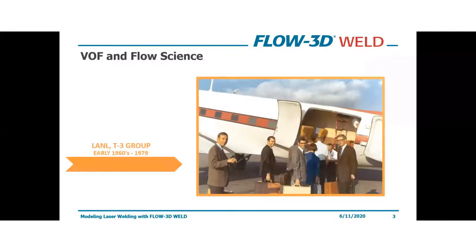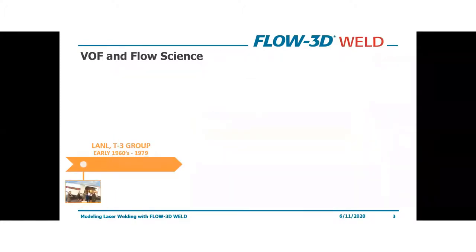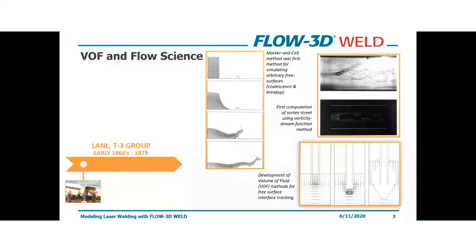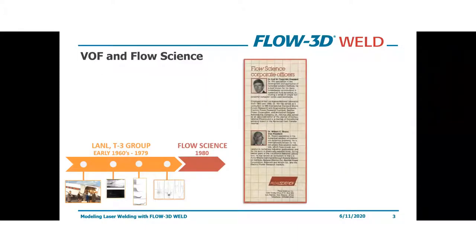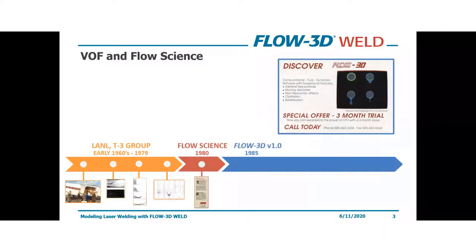A little bit about FlowScience. We started off in the early 1960s and 70s at the Los Alamos National Labs T3 Research Group. These researchers did a lot of the early pioneering work for CFD, including the marker and cell method, the vorticity stream function method, and eventually the development of the volume of fluid method, which is still at the heart of the Flow3D code today. In 1980, our founder Dr. Tony Hurt separated off and started the company FlowScience, and in 1985 Flow3D version 1.0 was released.